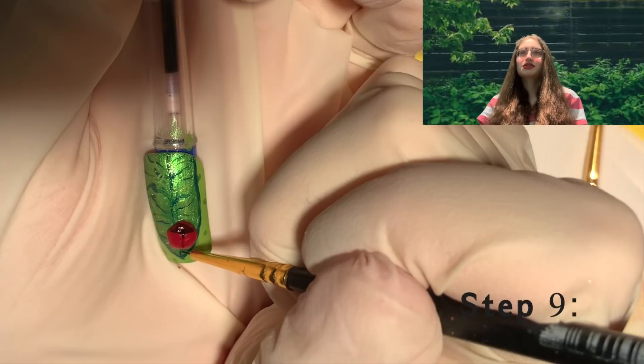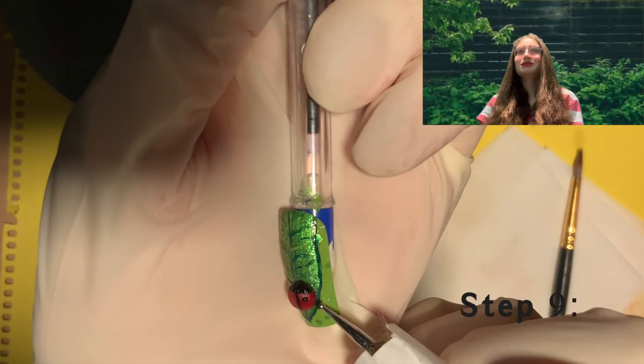Step nine, you can use a thin brush to draw on black for the front of the ladybug, a thin line in the middle and a dotting tool for the dots on either side of the line.